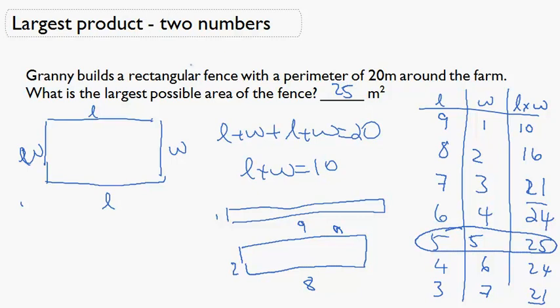So whenever you have two numbers which add up to something and you want to find the maximum product of these two numbers, the way to do that is to try to make these two numbers as close to each other as possible. That almost always gives you the largest possible product.